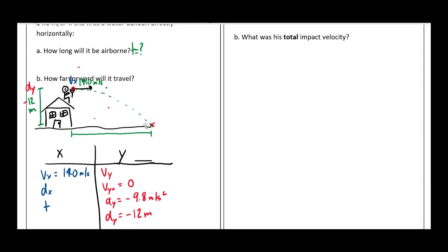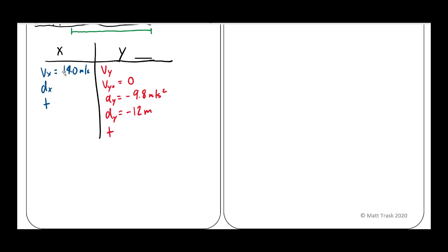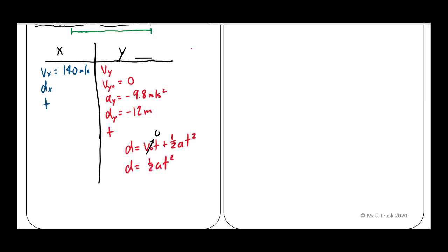Let's start with that. How long will it be airborne? I'm going to choose, and I can choose either side, but I know a lot more about the Y side, so that's what I'm going to stick with. How would I find time given these variables? Well, I could use D equals D naught T plus one half AT squared. Kind of nice because the initial Y velocity is zero, so I'm just going to check that out right away. And then I'm going to say D equals one half AT squared. And then I'm just going to do some algebra. I'm going to go through this very quickly because we're getting pretty comfortable with this at this point.